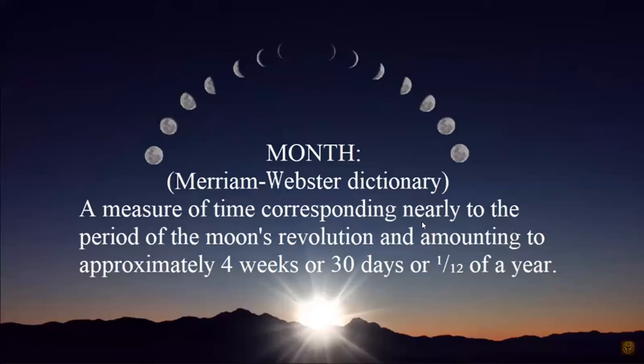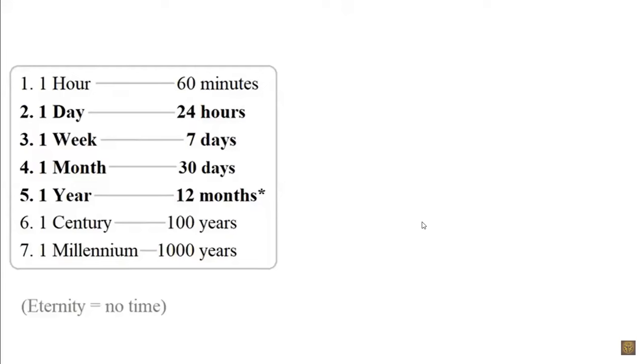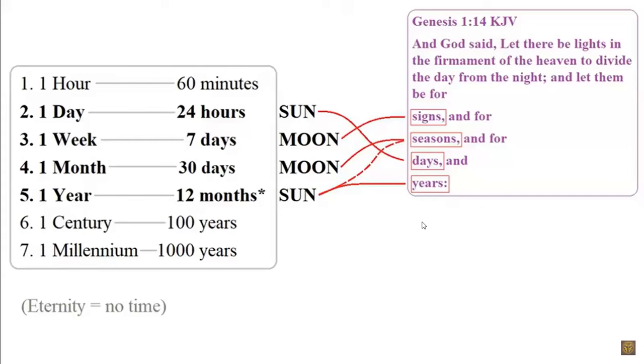The job of the moon is to show us the length of the weeks and months, and the job of the sun is to show us the length of the days and years. The main rule says observation over calculation. Even the Merriam-Webster Dictionary states that a month is a measure of time corresponding nearly to the period of the moon's revolution, amounting to approximately four weeks or 30 days.